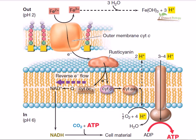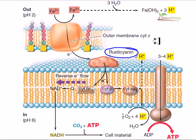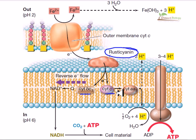This proton gradient helps to generate ATP using the ATP synthesis mechanism situated at the terminal point of the electron transport system. The first point in this system is rusticyanin — a complex. If you don't know the mechanism of electron flow in hydrogen bacteria or sulfur bacteria, go back and see those videos, because this process is similar with the same components involved.